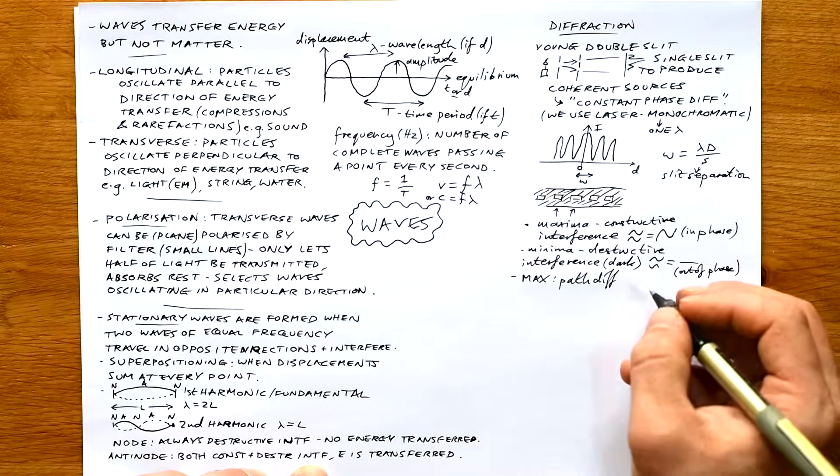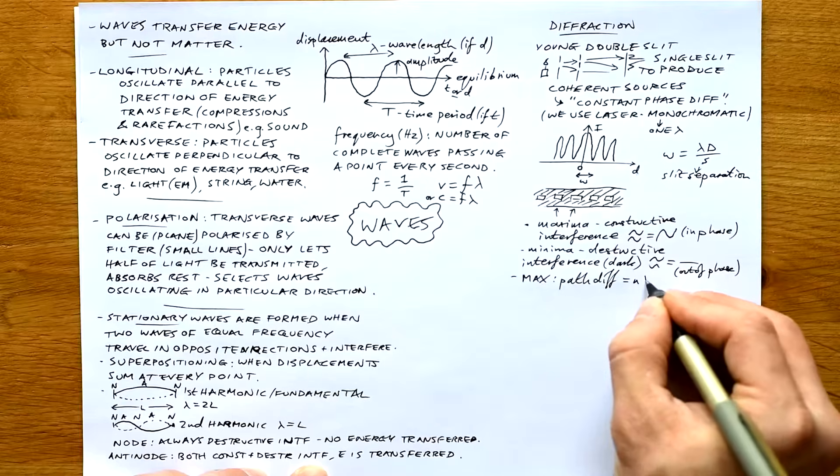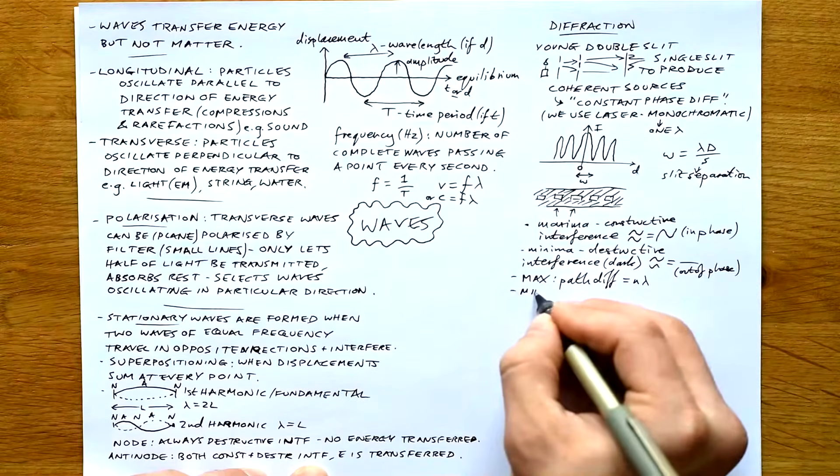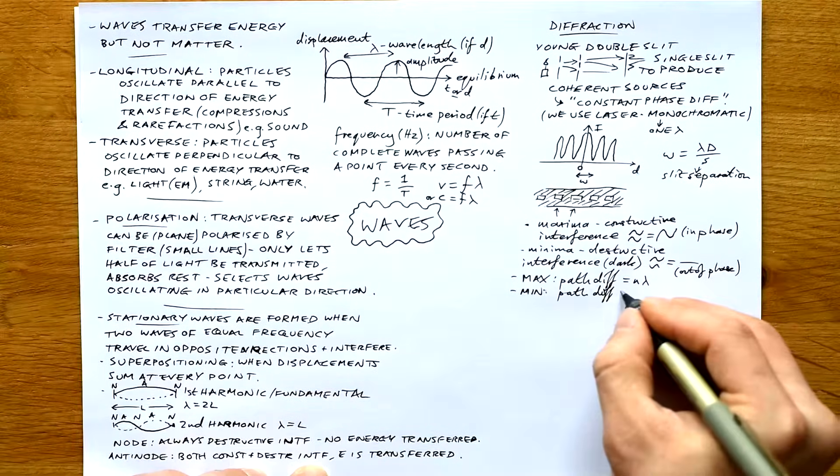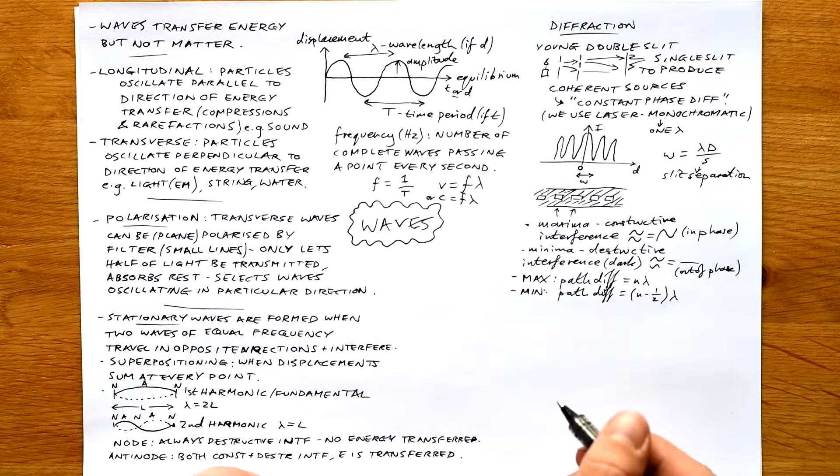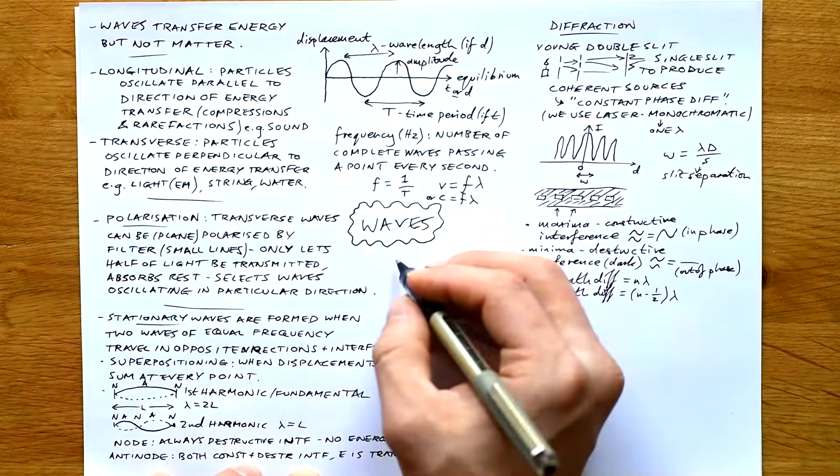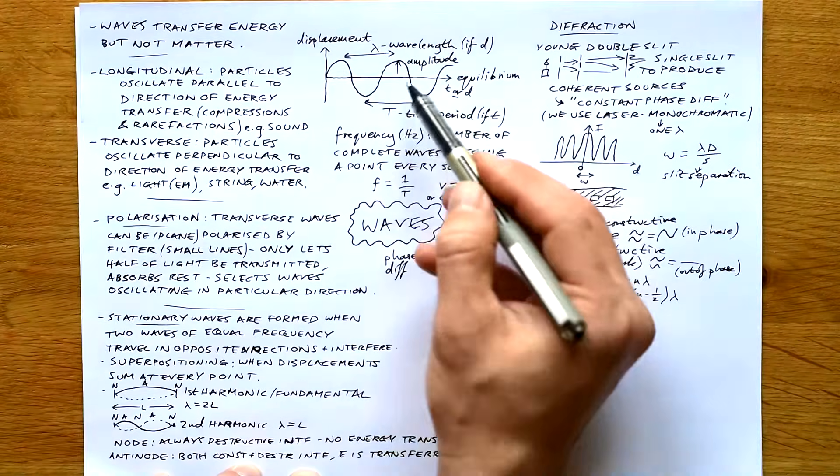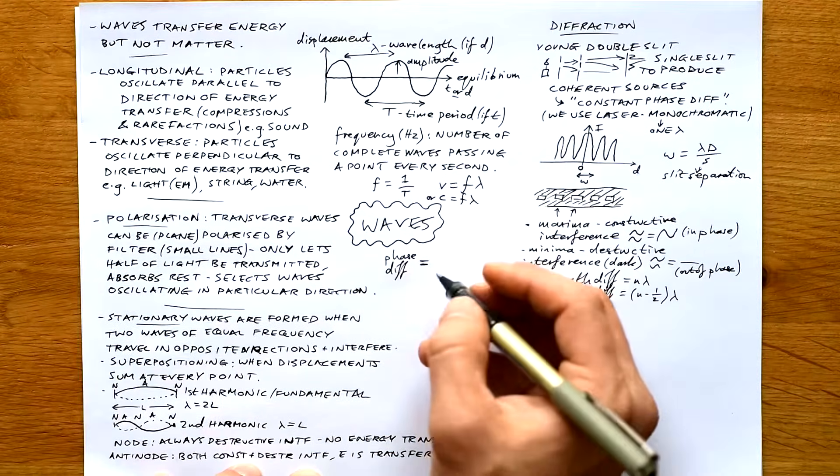Minima is where we get destructive interference - dark. For a maximum, the path difference, that's how much further one ray is traveling than the other, is equal to a multiple of the wavelength. For a minimum, path difference is equal to a whole number take away a half times the wavelength, so one and a half, two and a half, etc.